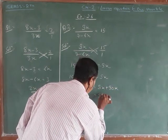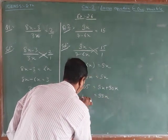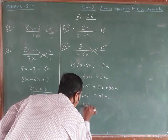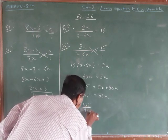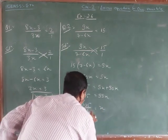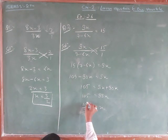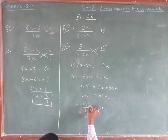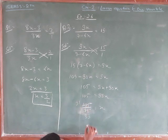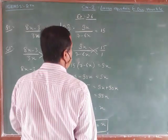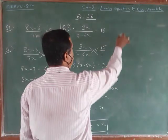From 99x equals 105, we can simplify. Dividing both sides, we get x equals 105 over 99. After canceling, we have x equals 35 over 33. That's the solution for question 2.